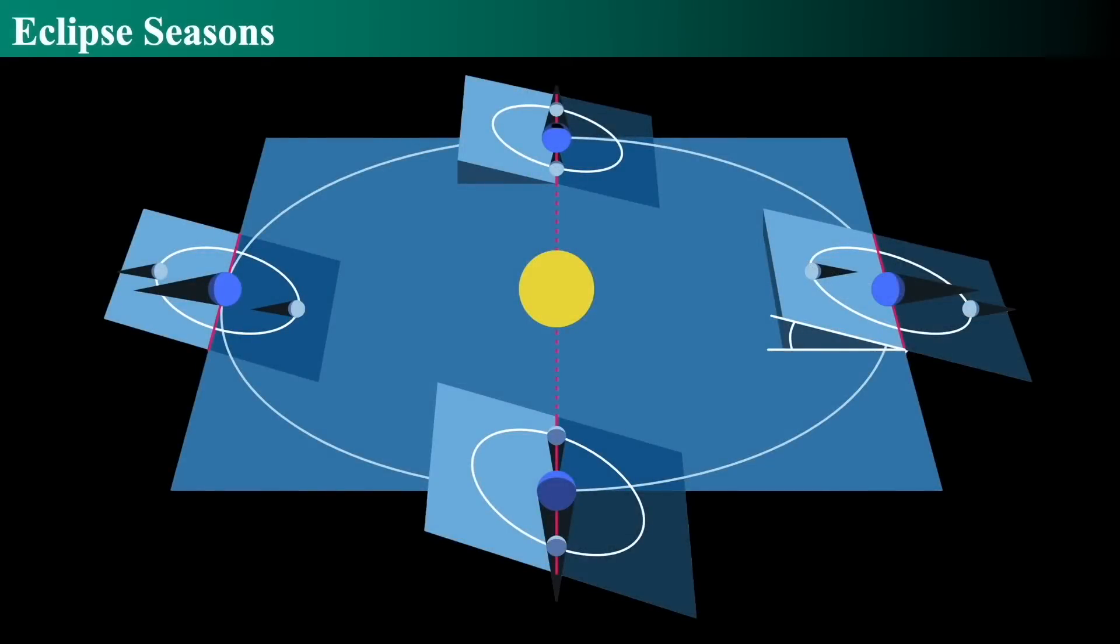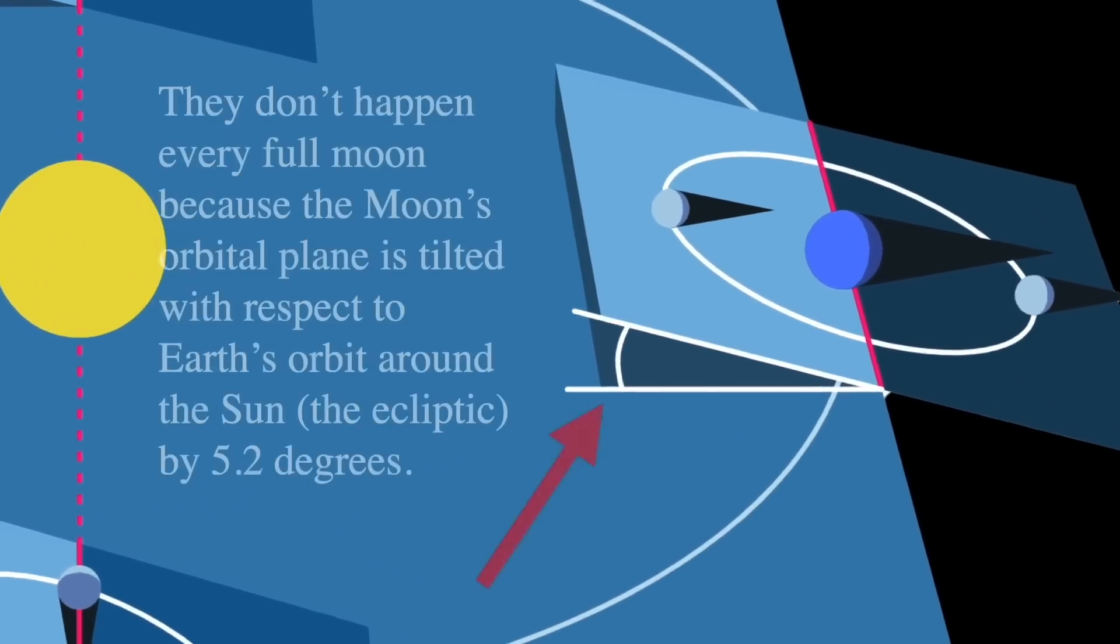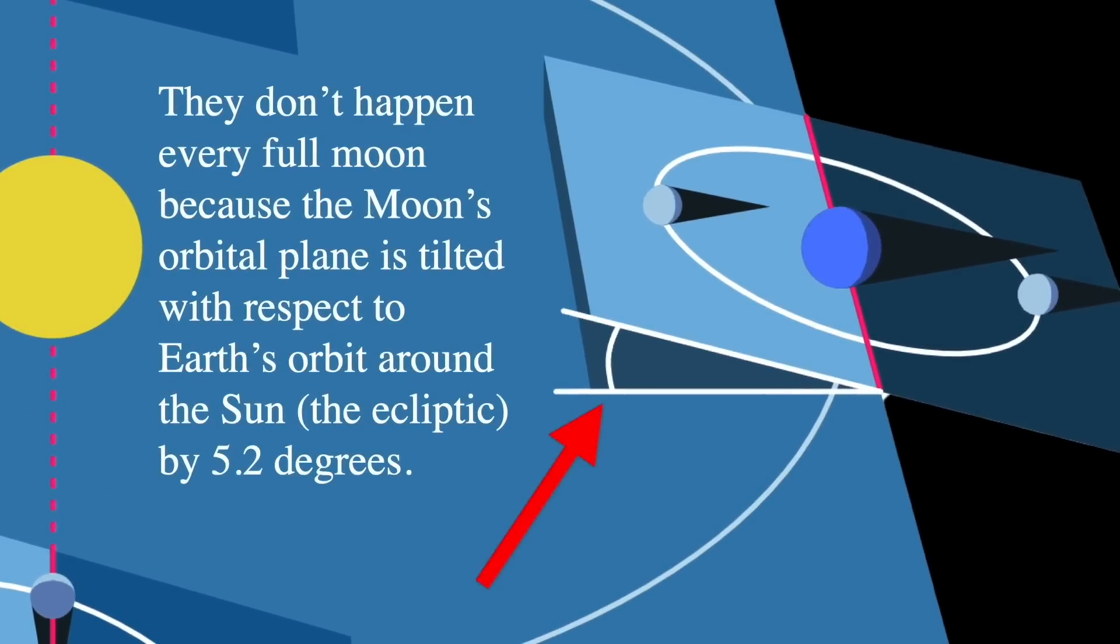And eclipse seasons are when the line of nodes, which is that red line, lines up. So let's see what we have. Because of this tilt of the Moon's orbit with respect to the Earth's orbit around the Sun, they simply don't happen every month because of that tilt. And the ecliptic is the path that's the big blue area, but the tilt is the tilt of the Moon's orbit.